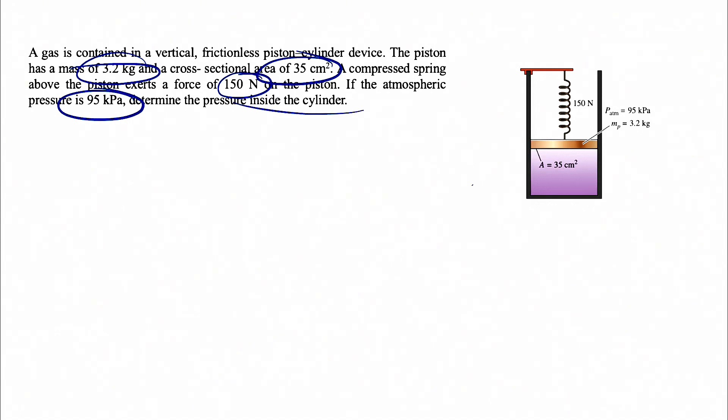So we're going to have some sort of gas that is purple in this device. As always, we're going to start with the free body diagram of the piston since we are in equilibrium. Now we have to figure out the different forces that we have in this free body diagram.